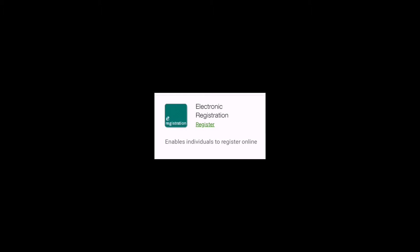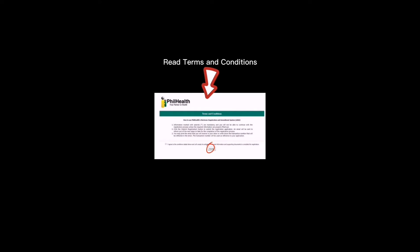After clicking the register link, a new window will pop up. It states that this online facility is for the registration of members in the formal and informal sectors. After that, you click 'Proceed.' A new window will appear again. You should read first the terms and conditions before you click 'Accept.' After clicking Accept, the form will appear.